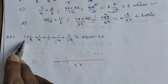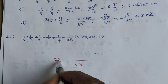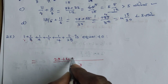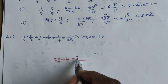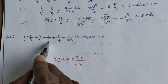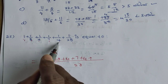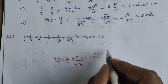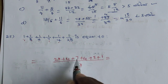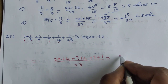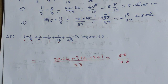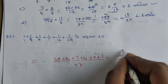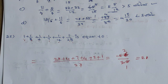The LCM is 28. Converting each fraction: 28 by 28 is 1, 14 by 28 is 2, 7 by 28 is 4, 4 by 28 is 7, 2 by 28 is 14, 1 by 28 is 28. Summing numerators: 28 plus 14 plus 7 plus 4 plus 2 plus 1 equals 56, giving 56 by 28 equals 2. Answer is 2.